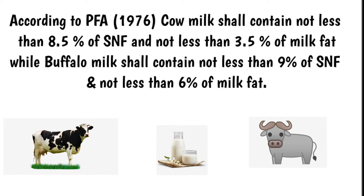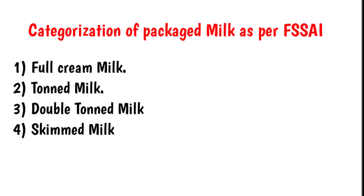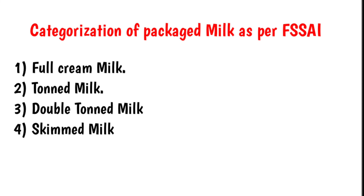SNF means everything that is in solid form in composition except milk fat, like protein, vitamins, and minerals. Categorization of packaged milk as per FSSAI — the varieties available in the market are: full cream milk, toned milk, double toned milk, and skimmed milk. Each type is prepared by admixture of cow or buffalo milk, or both, to standardize their fat and SNF percentage.